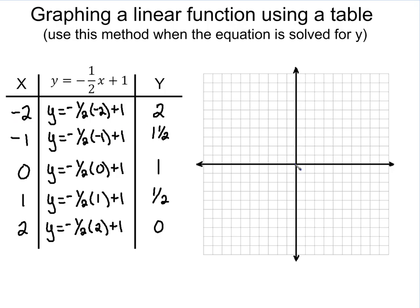So we're going to do the exact same thing we did in the last problem. We have negative 2, 2. So we're going to go over negative 2 and up 2, put a point. We have negative 1 and 1 and a half. So this time when we go up, we're just going to go into the middle of the box.